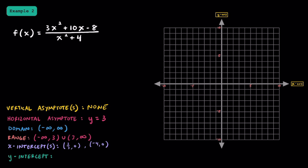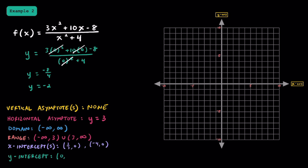Remember that when we're looking for a y-intercept, that's when x is equal to 0. So f(0) = 3 times 0 squared plus 10 times 0 minus 8, all over 0 squared plus 4. This simplifies to negative 8 over 4, which is negative 2. When x equals 0, y equals negative 2, so that's our y-intercept. While this function doesn't have a vertical asymptote, it does have a horizontal asymptote at y equals 3. We should have x-intercepts around 2/3 and at negative 4, and a y-intercept at negative 2.